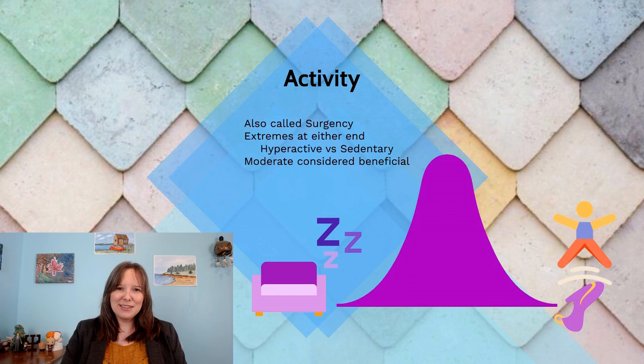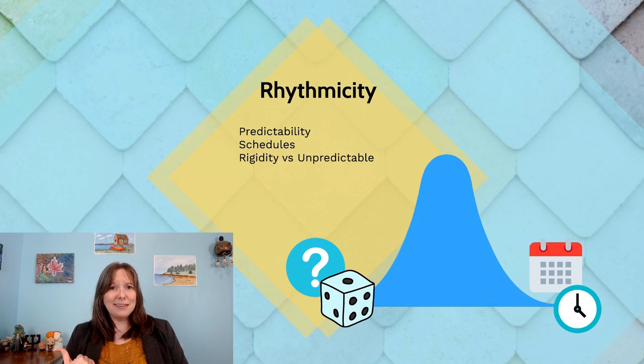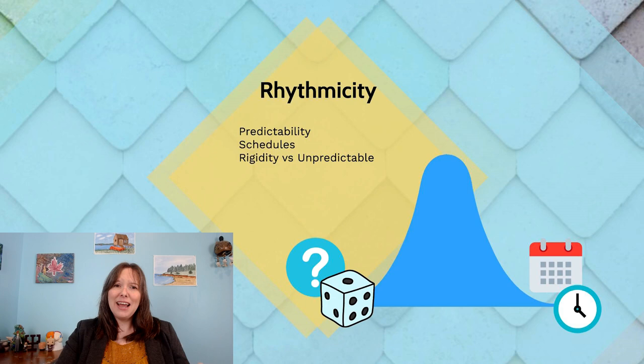Next is rhythmicity, which follows a normal curve. Some infants seem totally random — at one extreme they might eat and sleep at different times each day, some nights sleeping through, some nights not at all, some days eating a lot, some days not. As they get older into childhood, they become more spontaneous, unpredictable, and chaotic, making it hard for caregivers to prepare how to take care of them.